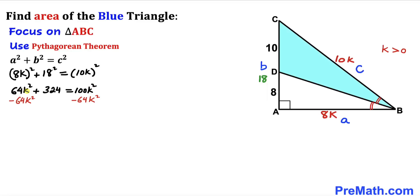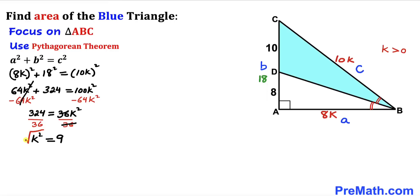Let's subtract 64K squared from both sides. We end up with 324 equals 36K squared. Dividing both sides by 36, our K squared value turns out to be 9. Taking the square root on both sides, K turns out to be positive 3 — and K must be a positive constant.